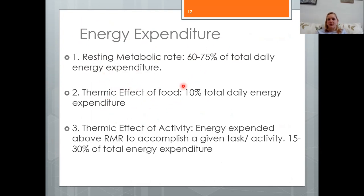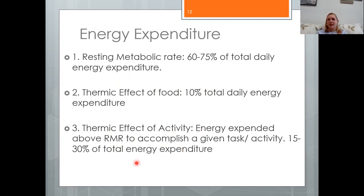The second component is the thermic effect of food, accounting for about 10% of total daily energy expenditure — the calories needed to digest, absorb, and process the foods consumed. Third is the thermic effect of activity: the energy needed for any activity above just sitting still, including everyday physical activity like walking to your car, playing with kids, or walking through a grocery store.